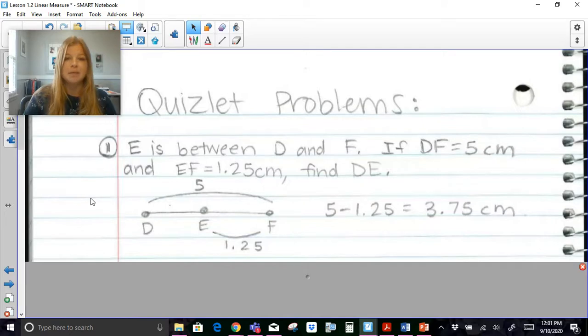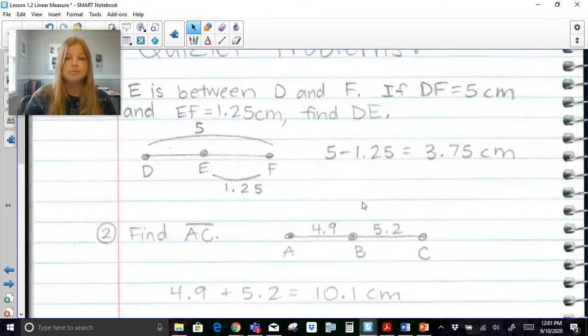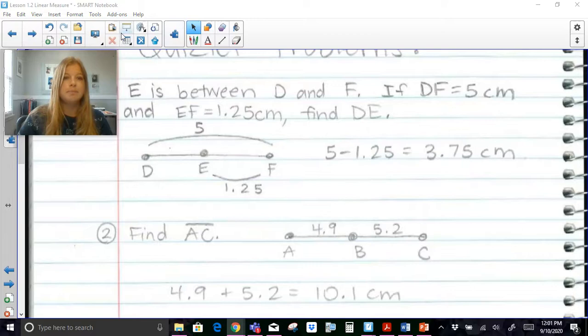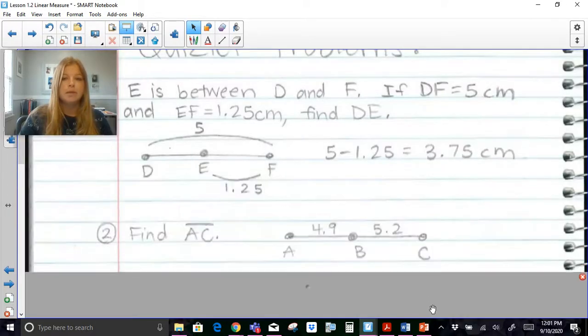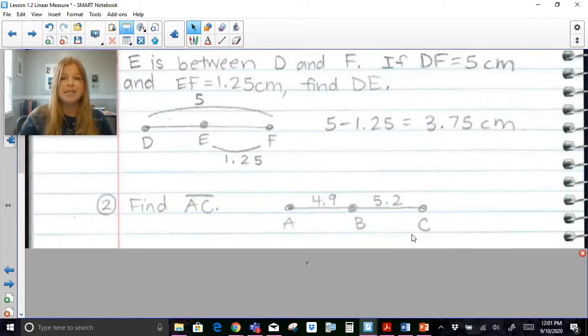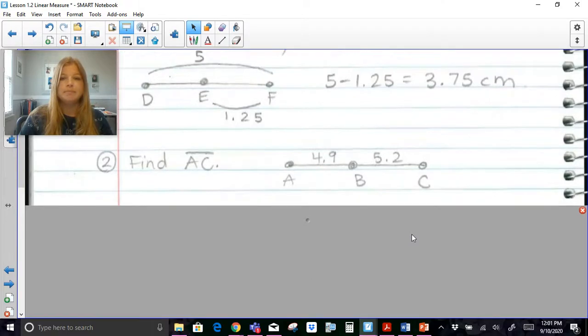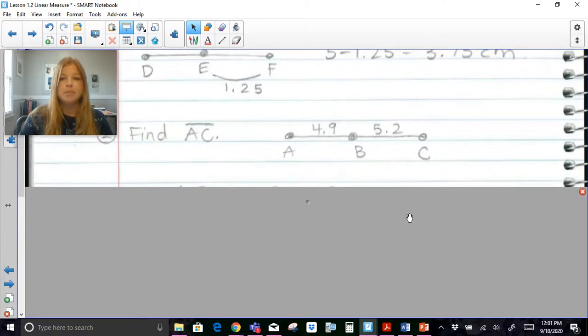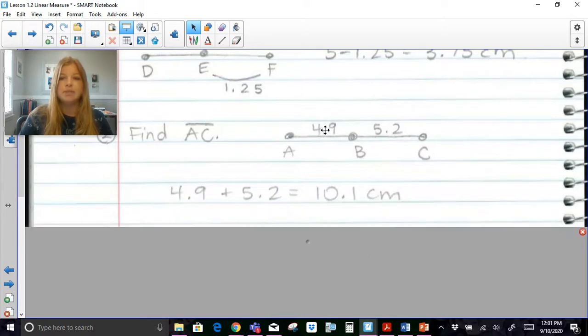Our next problem number two, find AC. Okay if I wanted to find AC I would simply need to add up 4.9 and 5.2 to get 10.1.